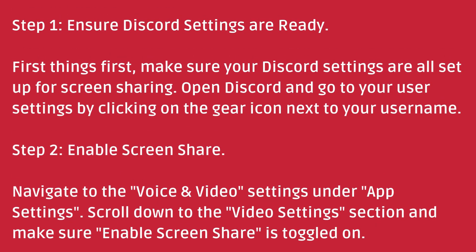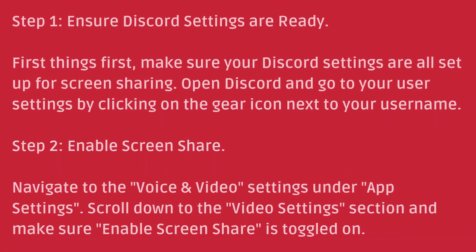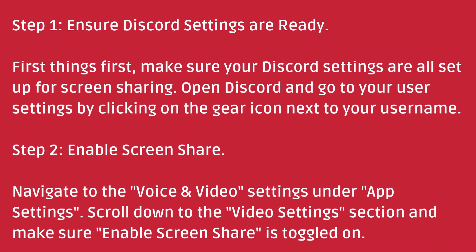Open Discord and go to your user settings by clicking on the gear icon next to your username. Step 2: Enable screen share. Navigate to the voice and video settings under app settings. Scroll down to the video settings section and make sure 'Enable Screen Share' is toggled on.